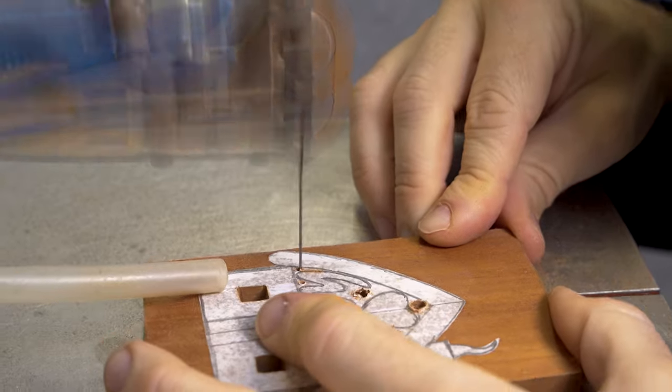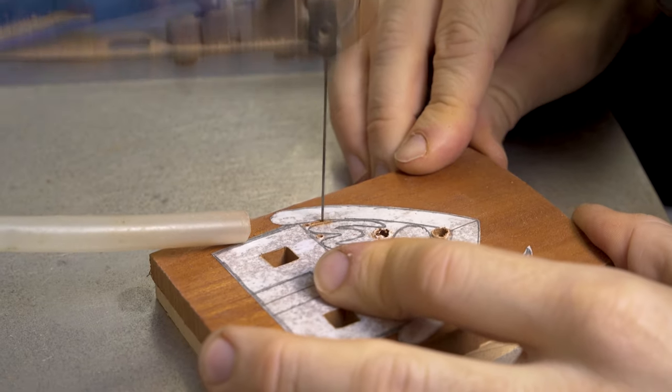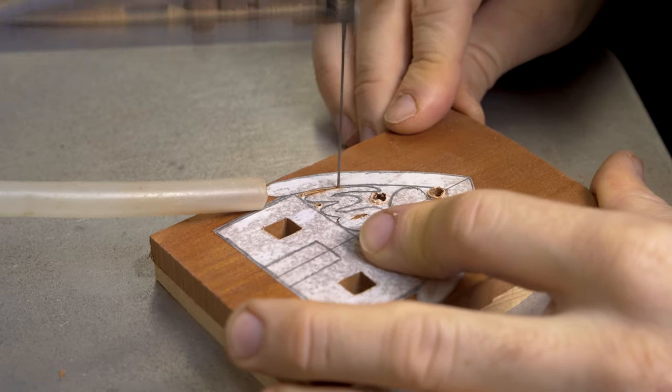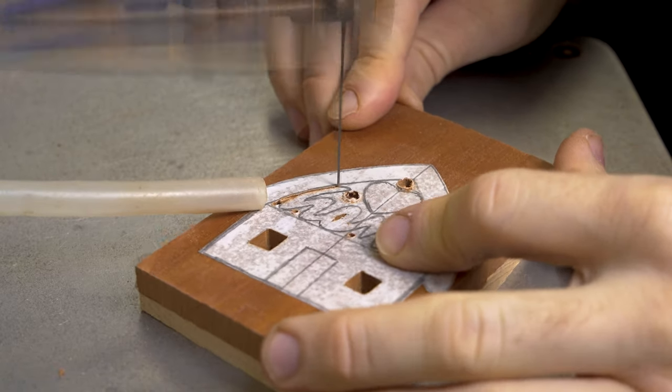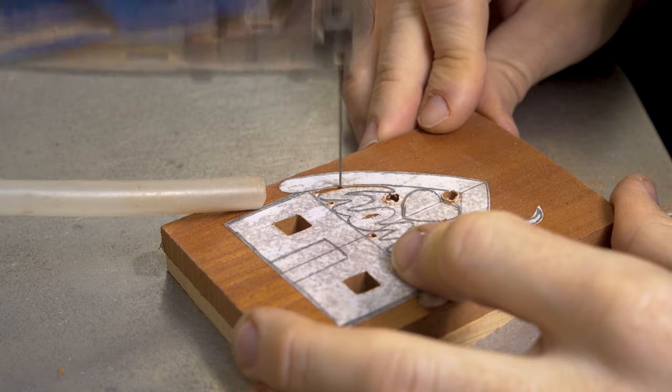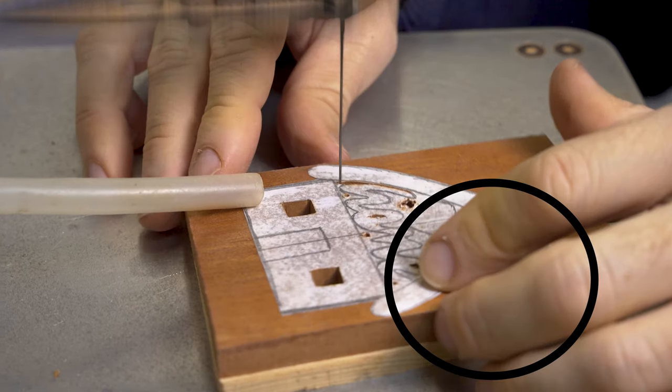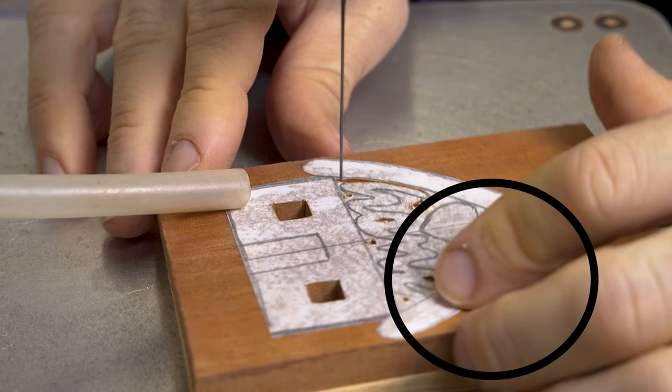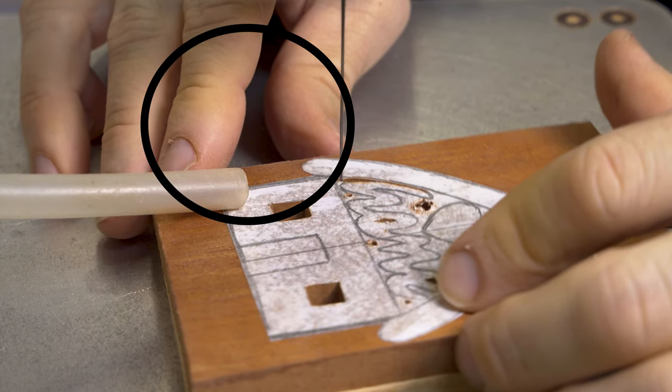Moving to the scroll saw itself, in this first clip we're highlighting the necessity to build up coordination between your hands. As we pause, you can see that our front hand is acting as a clamp, holding the project down, whilst the back hand is guiding the project through the scroll saw.